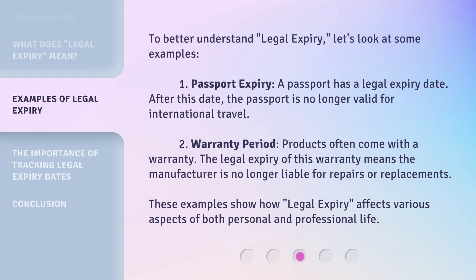To better understand legal expiry, let's look at some examples. First, passport expiry: a passport has a legal expiry date, and after this date, the passport is no longer valid for international travel. Second, warranty period: products often come with a warranty, and the legal expiry of this warranty means the manufacturer is no longer liable for repairs or replacements. These examples show how legal expiry affects various aspects of both personal and professional life.